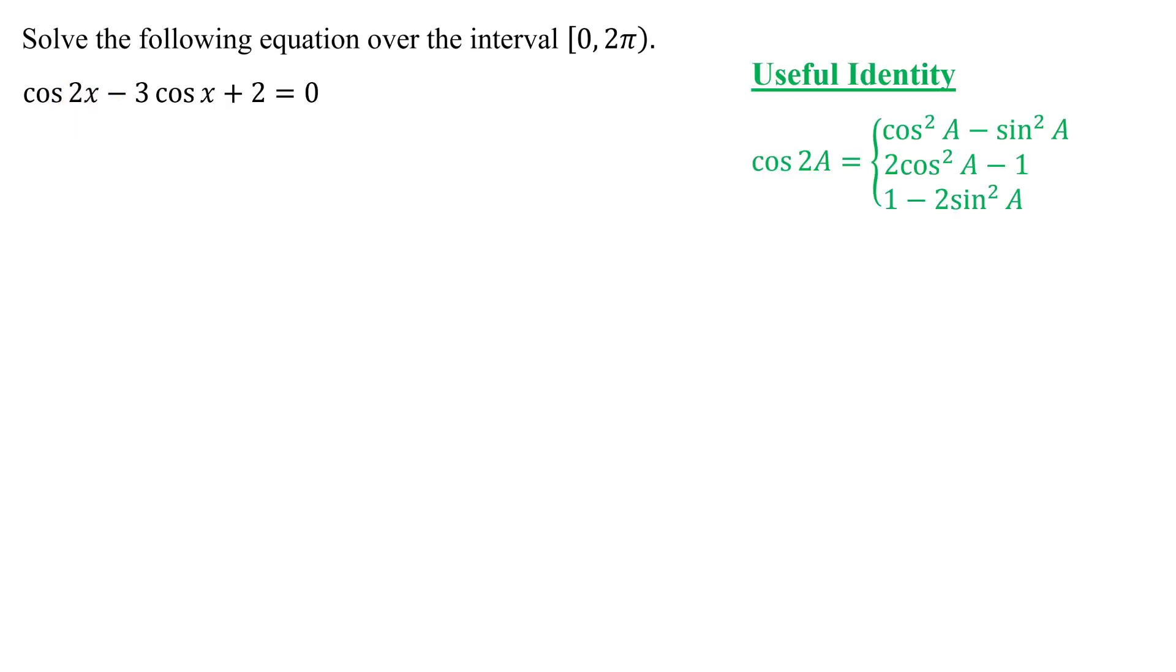So here is the identity for cosine of 2A, and this is the one that has three totally equivalent forms. All three of these will work in this problem, but one will work a lot more efficiently than the other two. So what you have to do is look at the other trig functions that we have in this equation. This equation just contains cosine x apart from my cosine of 2x.